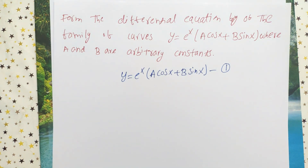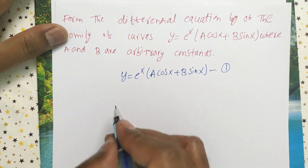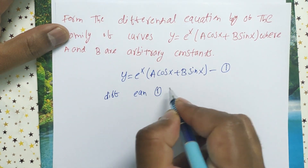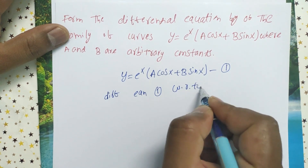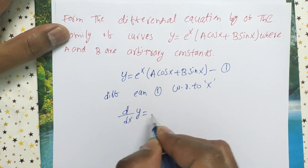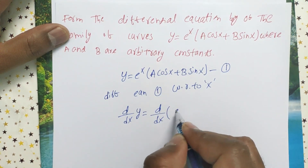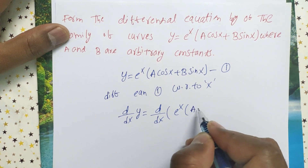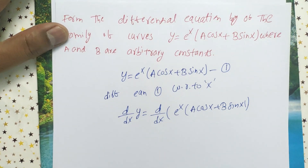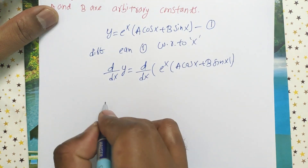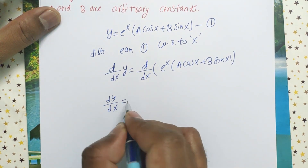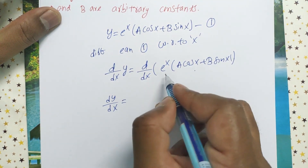Since there are two arbitrary constants, we have to differentiate two times. Now differentiate equation one with respect to x. Then d/dx of y equals d/dx of eˣ(a cos x + b sin x), so dy/dx equals — here we have a product of two terms, this is the first term.